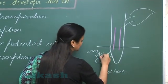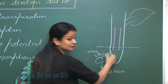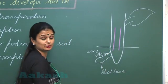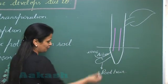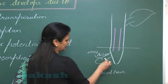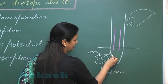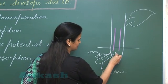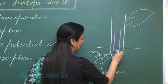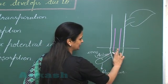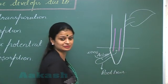This is an active process which requires ATP and energy. From the root, through the different cells, these ions start accumulating in the xylem channels.